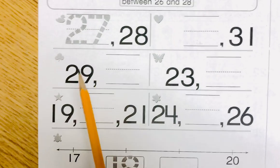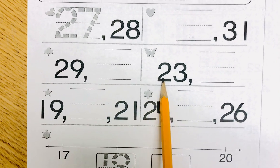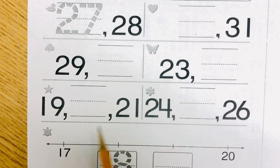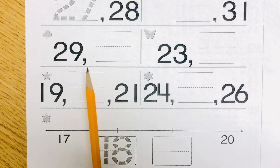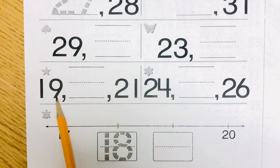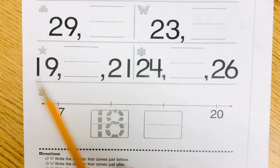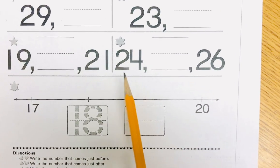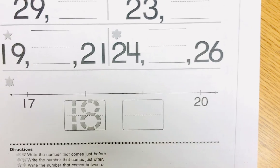In the shamrock box, what number comes after 29? In the butterfly box, what comes after 23? Now in the star box, what number comes in between 19 and 21? And if you want, you can use your number line at the top. In the flower box, what number comes in between 24 and 26?